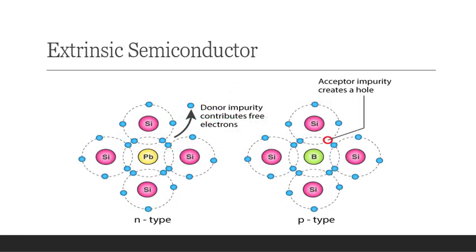Now let us discuss about the extrinsic semiconductor. Due to poor conduction at room temperature, the intrinsic semiconductor is not suitable in electronic devices. Hence, the current conduction capability of the intrinsic semiconductor should be increased. This can be achieved by adding a small amount of impurity — the process called doping — making it an extrinsic semiconductor. Typically 1 to 2 atoms of impurity per 10^16 intrinsic atoms are added.